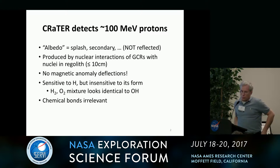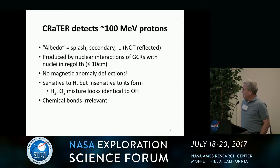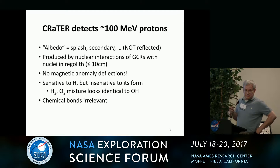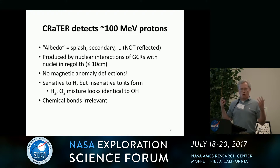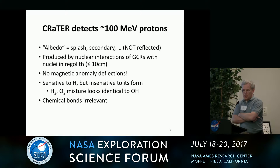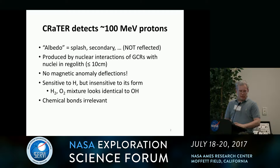The cosmic ray telescope for the effects of radiation, CRATER, on LRO, in the mode we're using it, detects protons with energies around 100 MeV. We call these albedo protons, but some people prefer the term splash — you might call them secondary protons. These are not reflected off the moon; they are produced by cosmic rays at very high energies, hundreds of MeV to over a GeV, hitting nuclei in the regolith and breaking them up. Because these protons can travel through about 10 centimeters of regolith before they get stopped, that's how deep we're sensing in the regolith — about 10 centimeters.